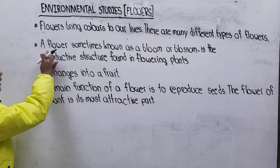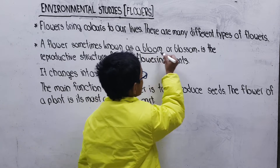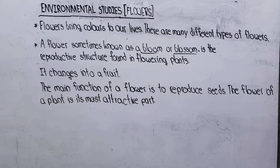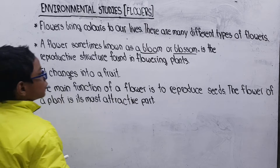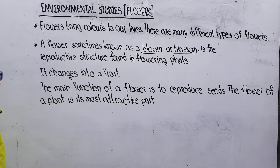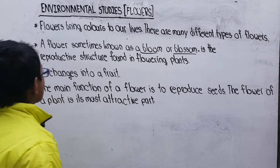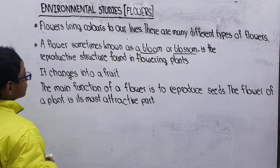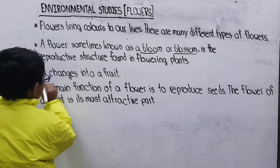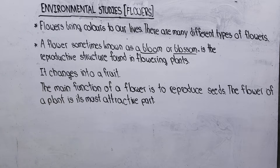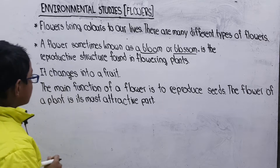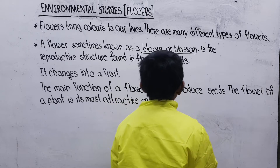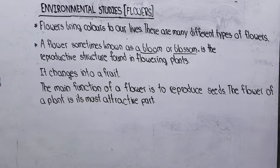This flower is sometimes known as bloom or blossom. It is the reproductive structure for the flowering plants. It changes into fruit. The main function of a flower is to reproduce seeds.